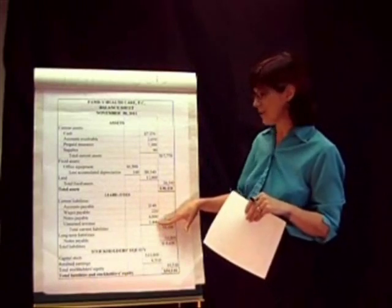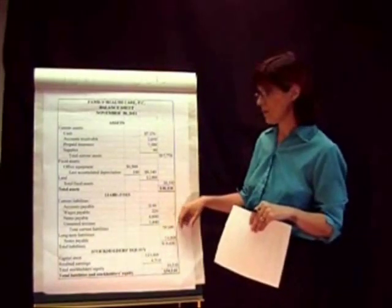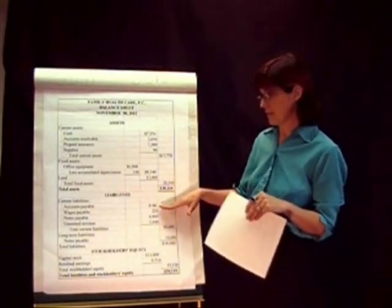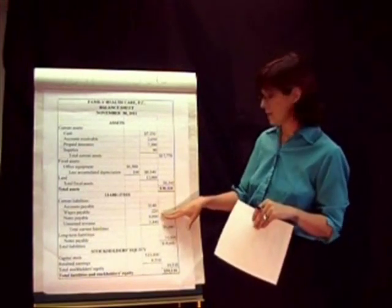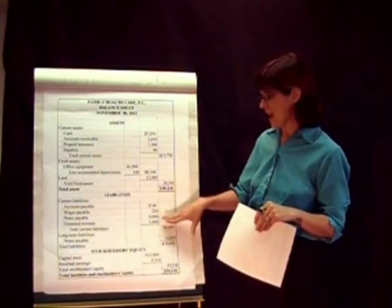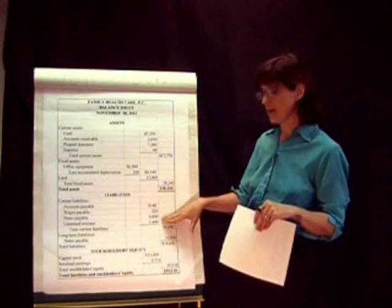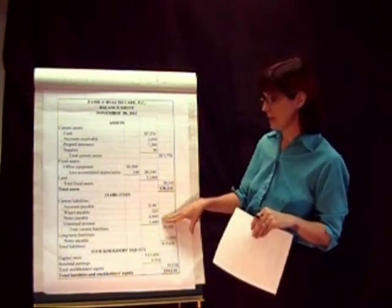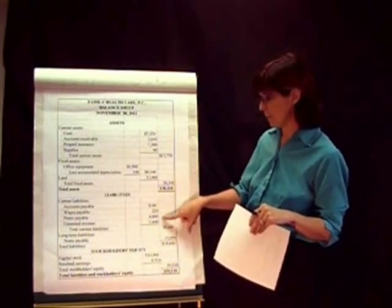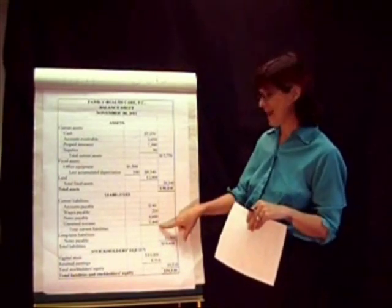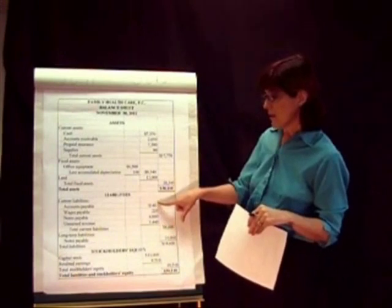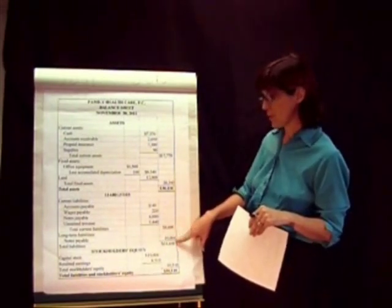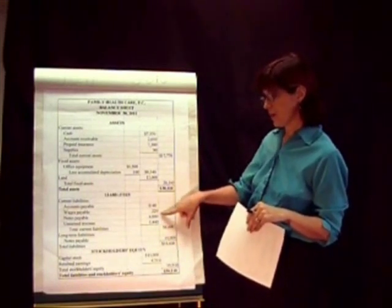Current liabilities also follow the one-year rule — they are anything we owe that's due in less than a year. Accounts payable are 30-day items, wages payable should always be current since no employee waits over a year for their wages, and notes payable can be current if due within a year or longer-term if not. We also have unearned revenue listed, which is a current liability that doesn't end in the word 'payable.'